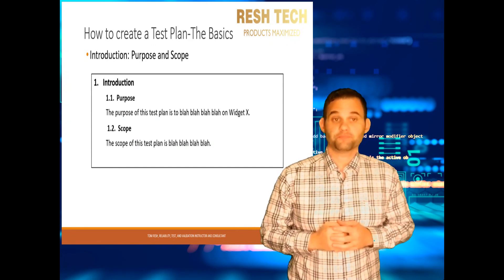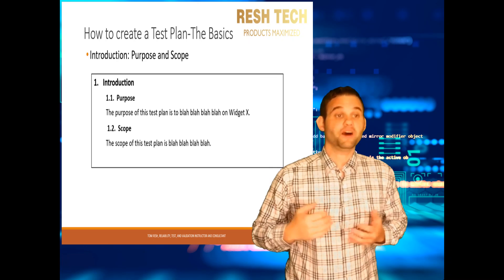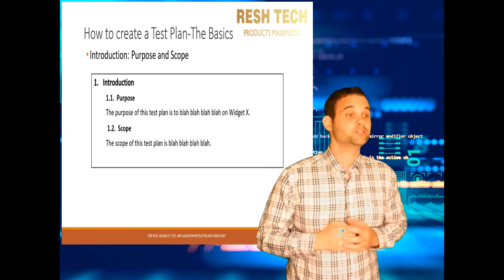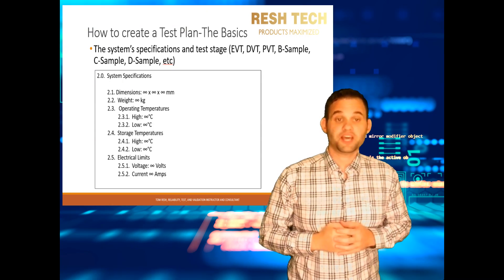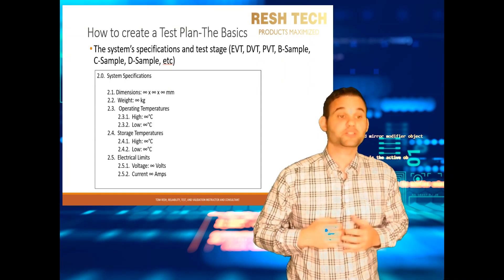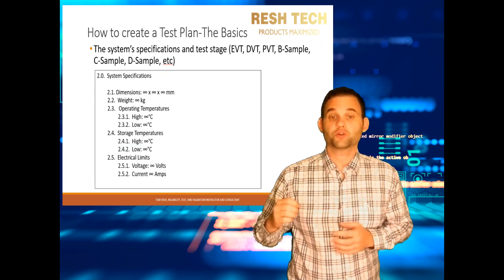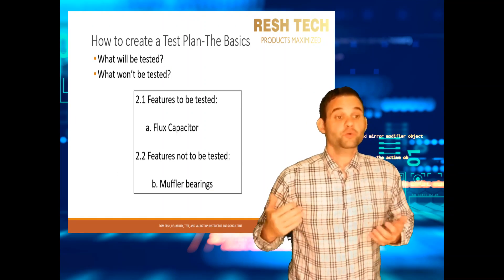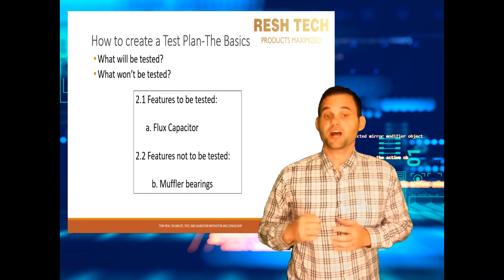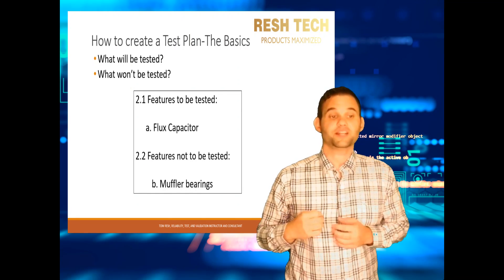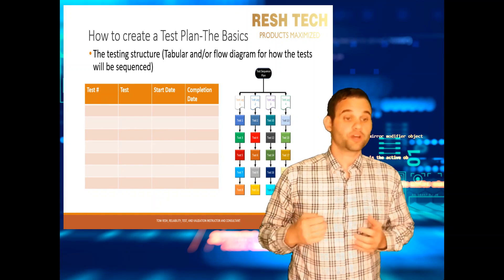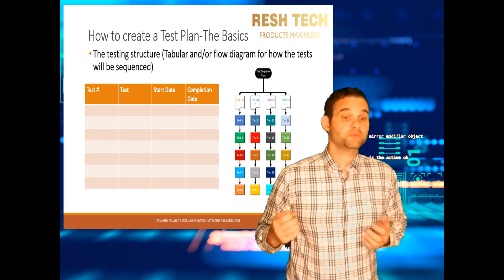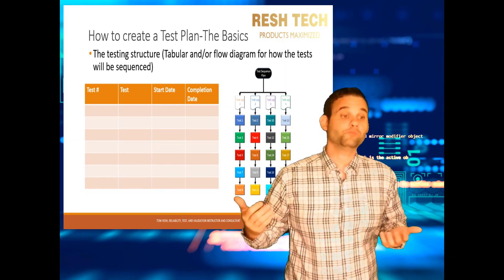Let's cover the basics on how to create a test plan template. You want to start with an introduction — let the reader understand the intent of the test plan with a well-written purpose and scope. You want to list the system specifications such as electrical parameters, temperature and electrical protection limits, dimensions and weight. You want to list out features and functionality that will and will not be tested. You also want to create the test sequencing for how your test will be performed — refer to my video on test sequencing for more details.